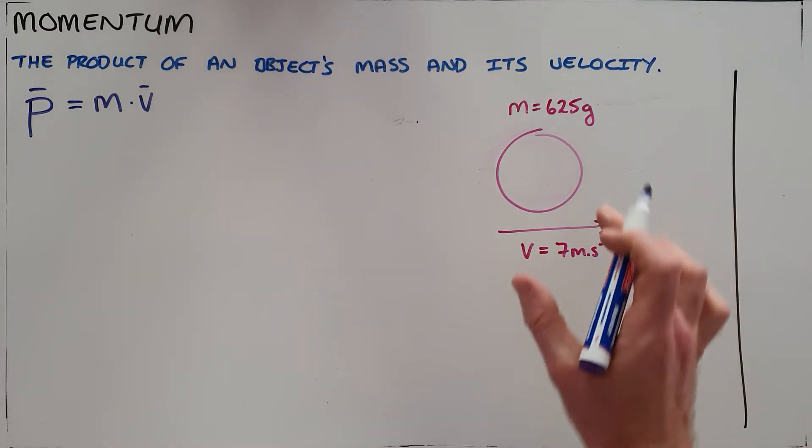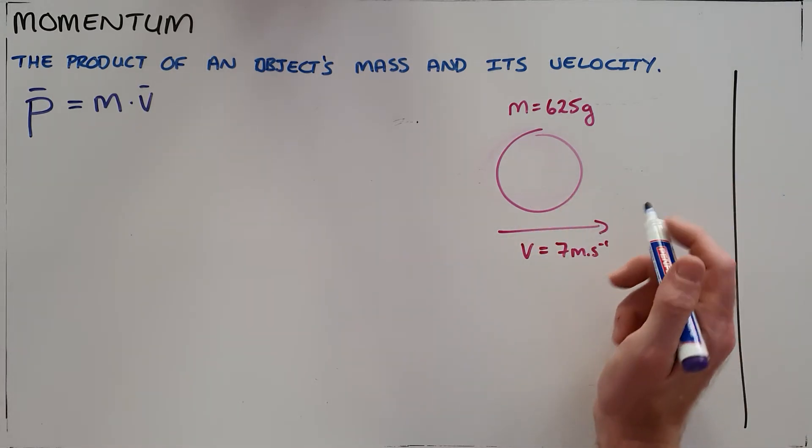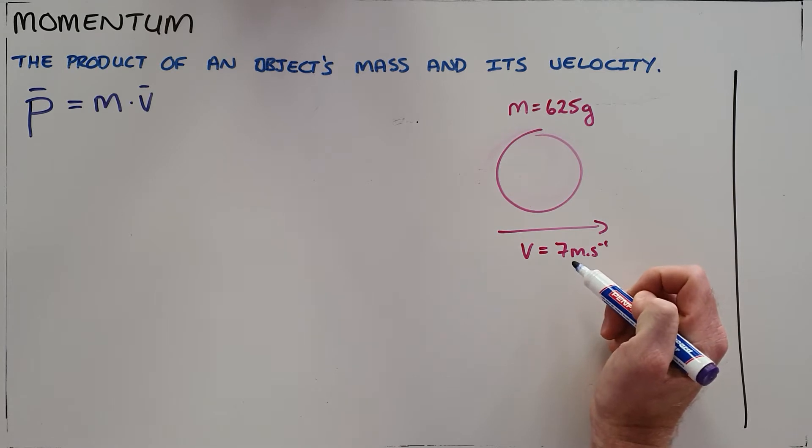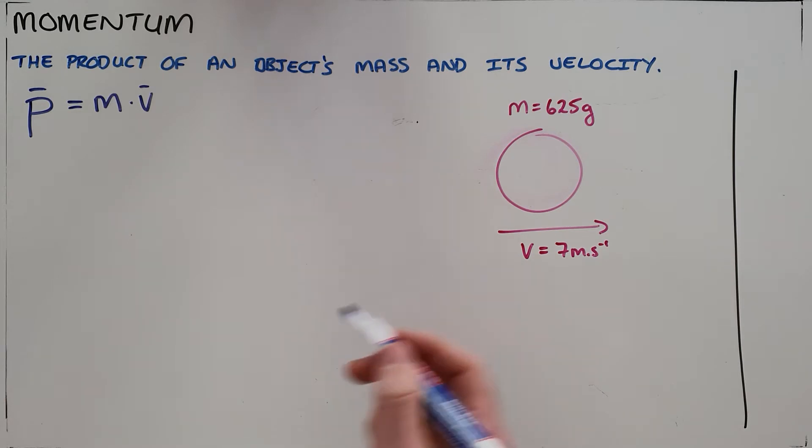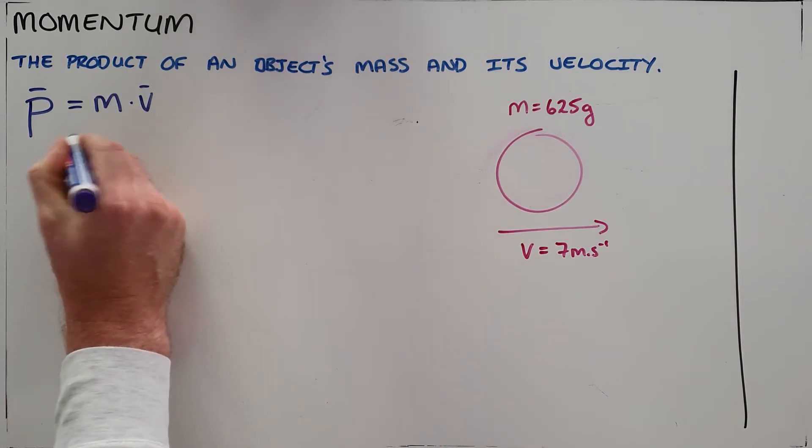So for this object over here, we have a ball that has been thrown towards a wall at 7 meters per second. The ball has a mass of 625 grams. We can calculate the momentum of this ball.